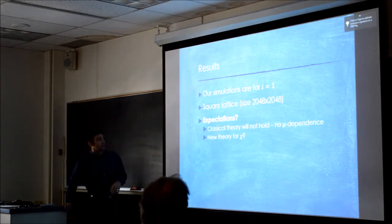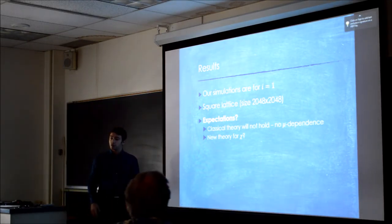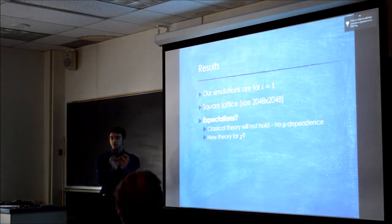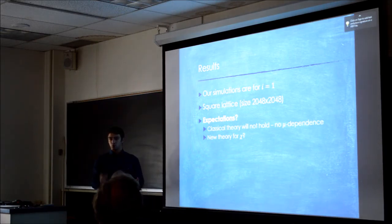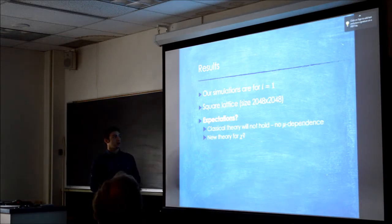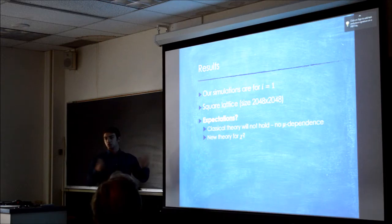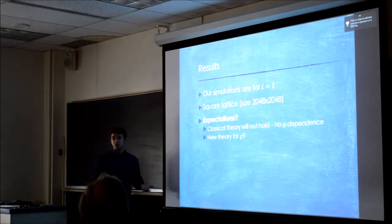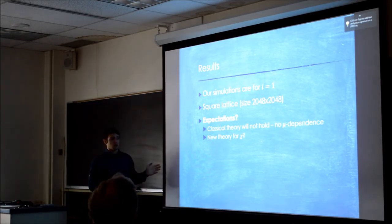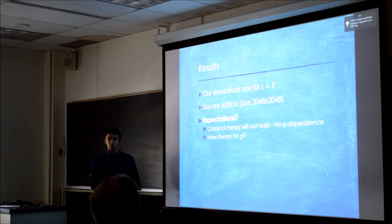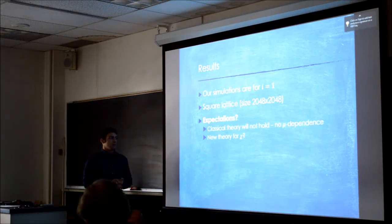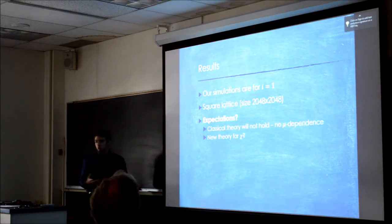So some details. Our simulations are for i equals one, so that means that a cluster of two particles forms an island that no longer moves. One guy can bounce around, and then if he hits something else, he's stuck. We're doing this on a square lattice of about 2,000 by 2,000. We can do bigger or smaller systems. We expect that the classical theory is not going to hold, because if you guys remember, it was i over i plus two. So for i equals one, that's just one-third. There's no mu dependence at all. We expect that maybe it's not going to be right, and we want to see what it comes out to be.